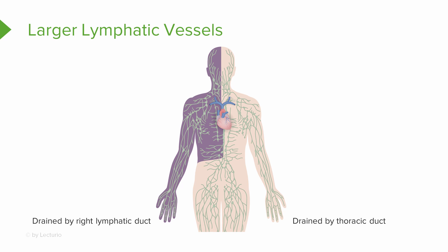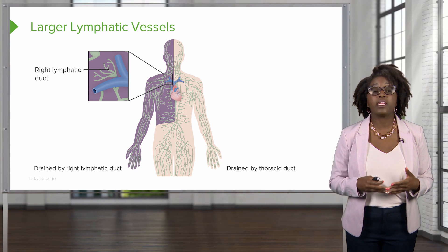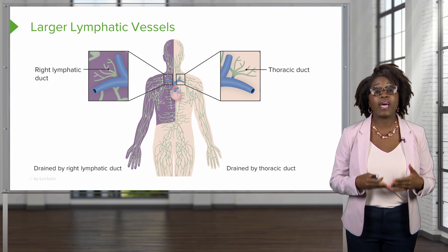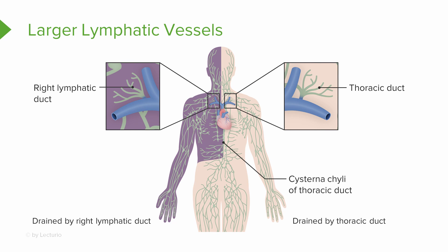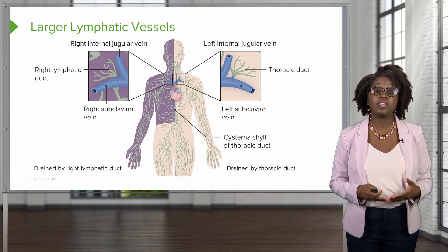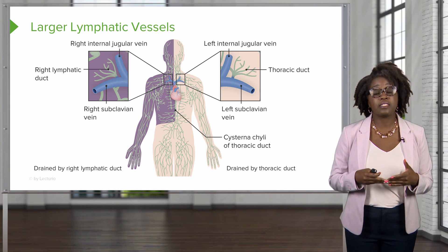The lymph is then going to be delivered from these trunks into one of the two large lymphatic ducts. We have the right lymphatic duct, which is going to drain the right upper arm and the right side of the head and the thorax. Then we have the thoracic duct, which drains the entire rest of the body. In some individuals, we also have this enlarged sac in the abdominal area known as cisterna chyli, which is where the thoracic duct is going to actually start. Each of these ducts are going to empty the lymph into our venous circulation at the junction of the internal jugular and subclavian veins on each side of the body.